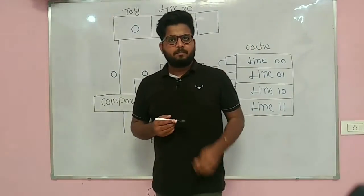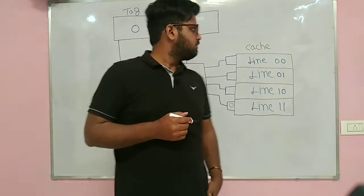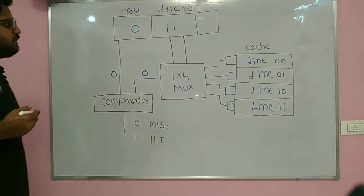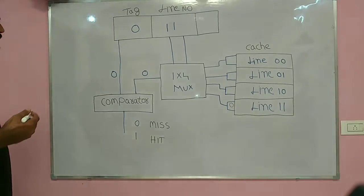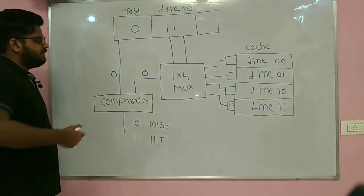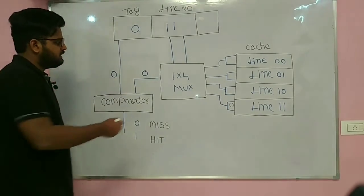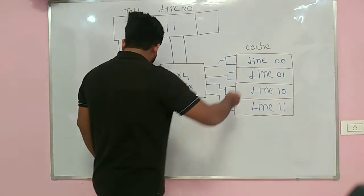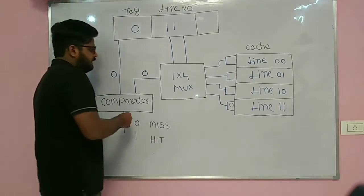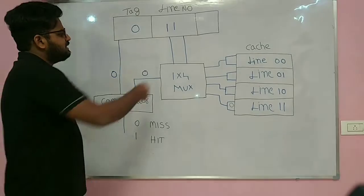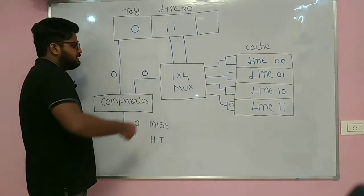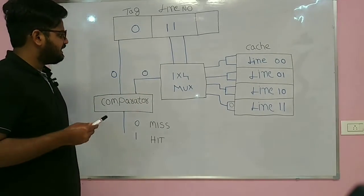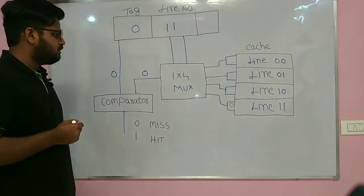In order to implement direct mapping in hardware, you can implement it in this way. This is a mux, this is a cache, this is a comparator. These devices I explained clearly in digital logic design.